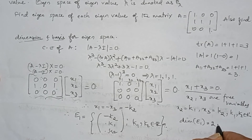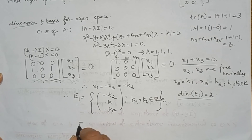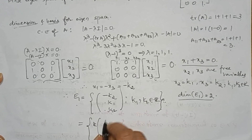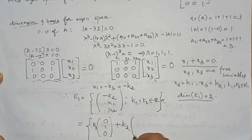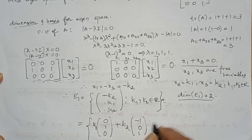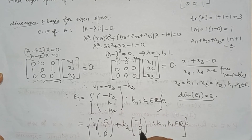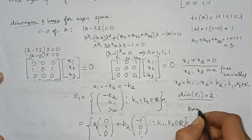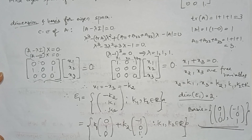The dimension of E1 equals 2, which is the geometric multiplicity of eigenvalue lambda equals 1. To find the basis, factor out k1 and k2: the solution equals k1 times (0, 1, 0) plus k2 times (minus 1, 0, 1), where k1, k2 belong to the reals. Therefore, a basis for eigenspace E1 is {(0, 1, 0), (minus 1, 0, 1)}, associated with eigenvalue lambda equals 1.